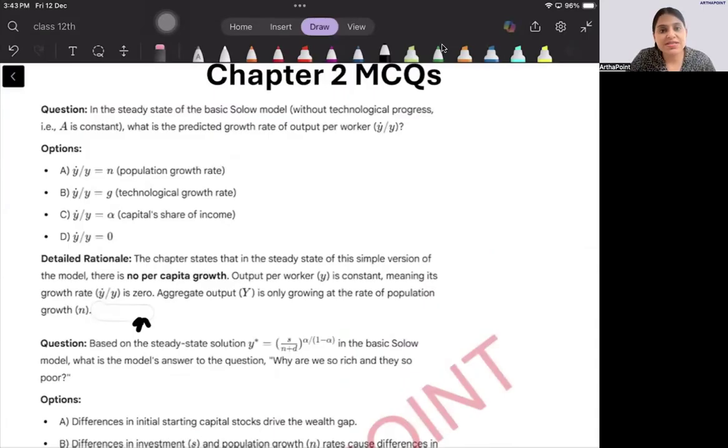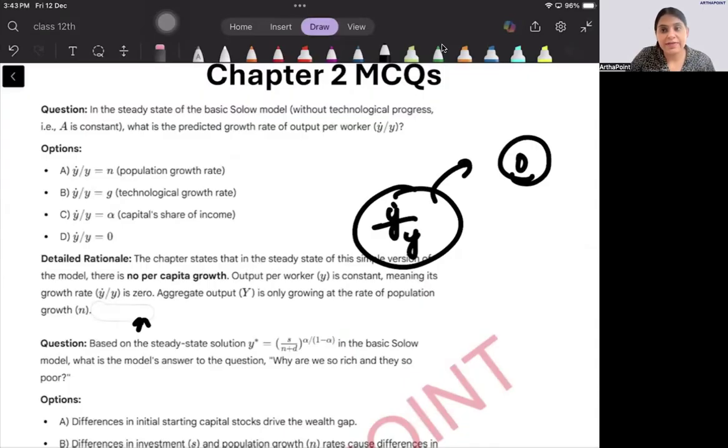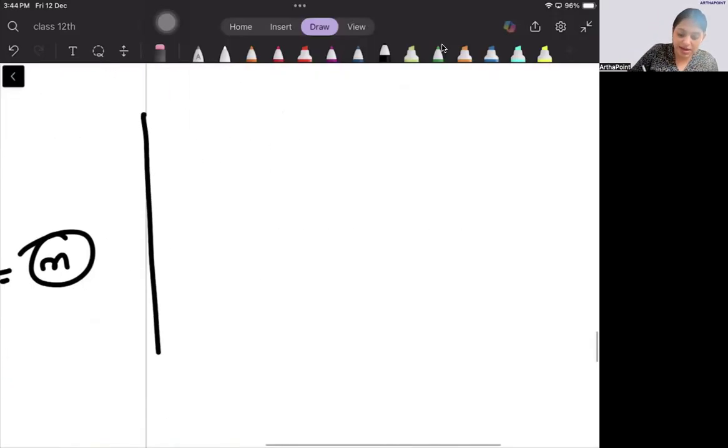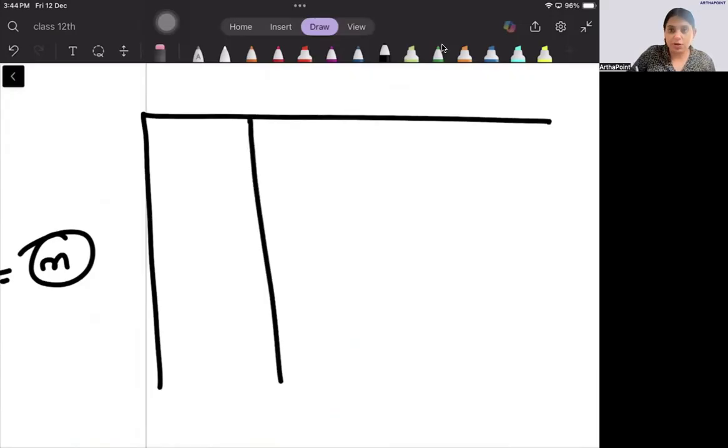In the steady state of basic Solow model, what is predicted growth rate of output per worker? Growth rate in basic model is zero. And output per worker growth rate without technological progress is zero. But the aggregate output, that will grow at the rate of population if population is present.